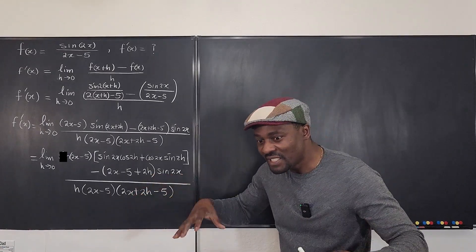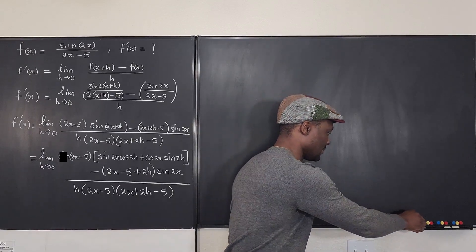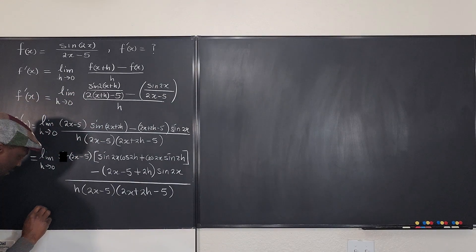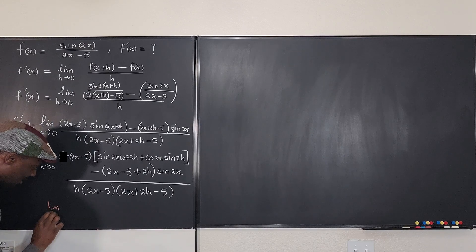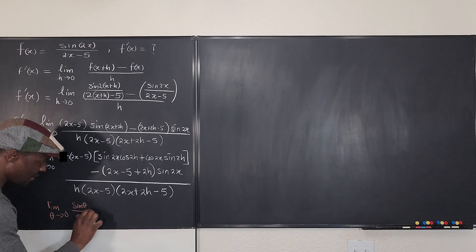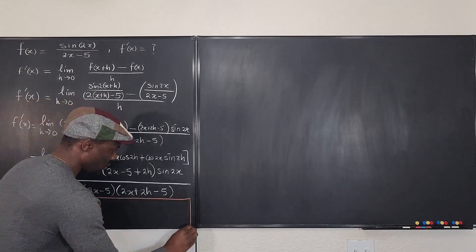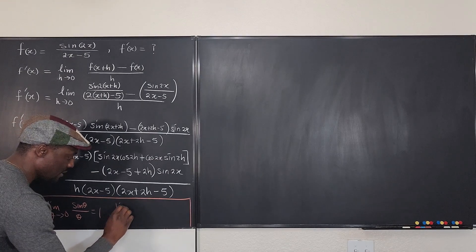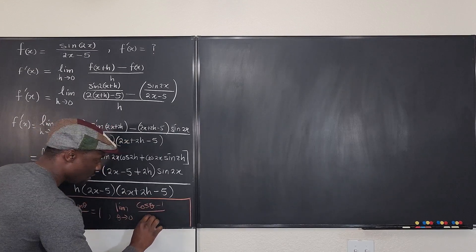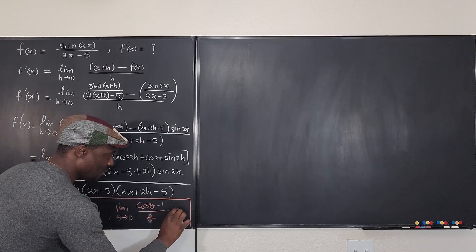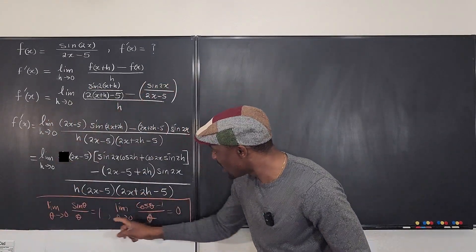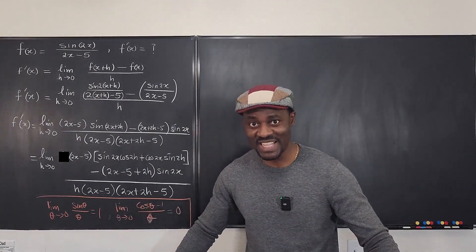Now it's essential that you recall these two identities we'll always use. First, the limit as theta goes to zero of sine theta over theta equals 1. Second, the limit as theta goes to zero of cosine theta minus 1 over theta equals 0. These two are essential — every time you do this, you'll use either both or one of them.